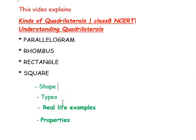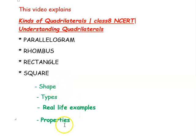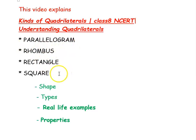Hi, we are from Atomtution. In this video we are going to see about various kinds of quadrilaterals — that is shape, types, real life examples and properties of quadrilaterals such as parallelogram, rhombus, rectangle and square.